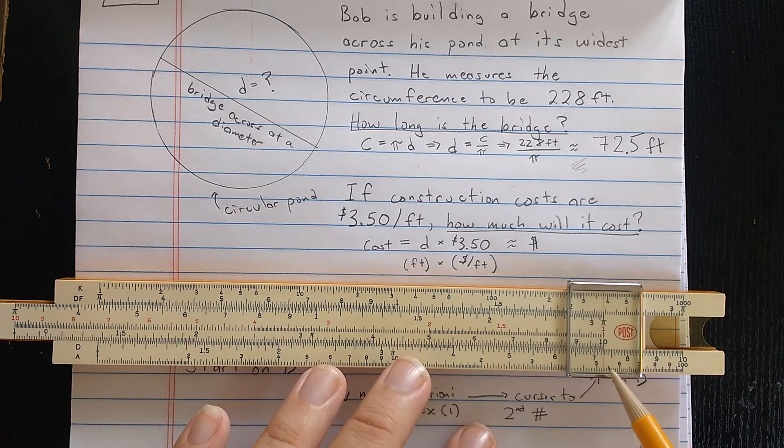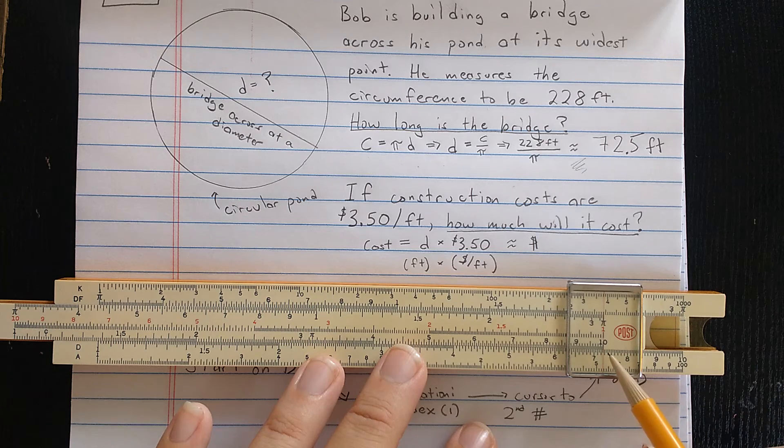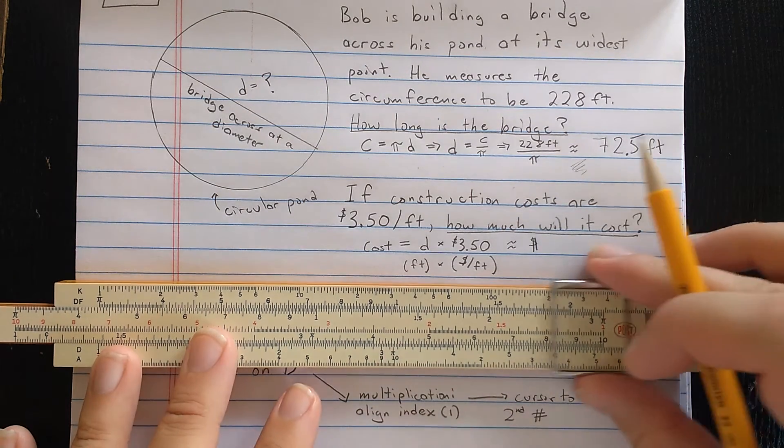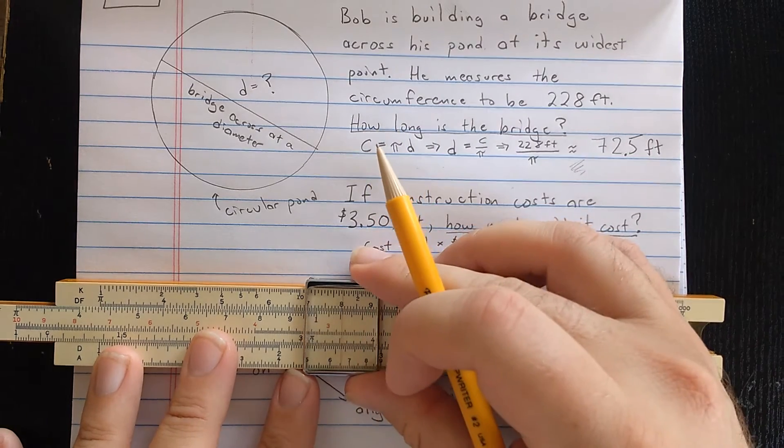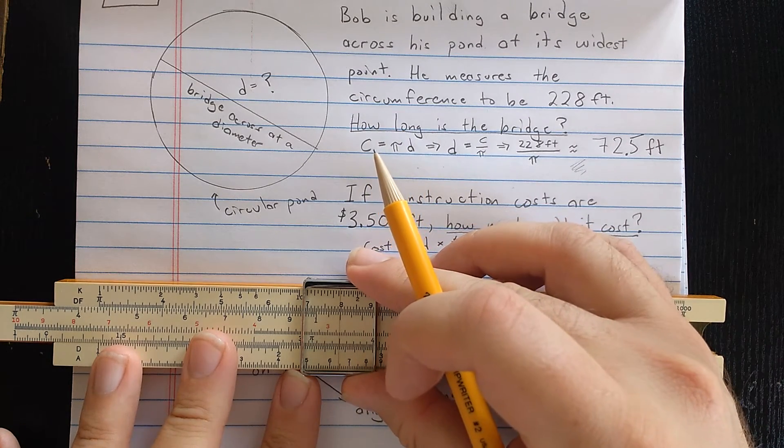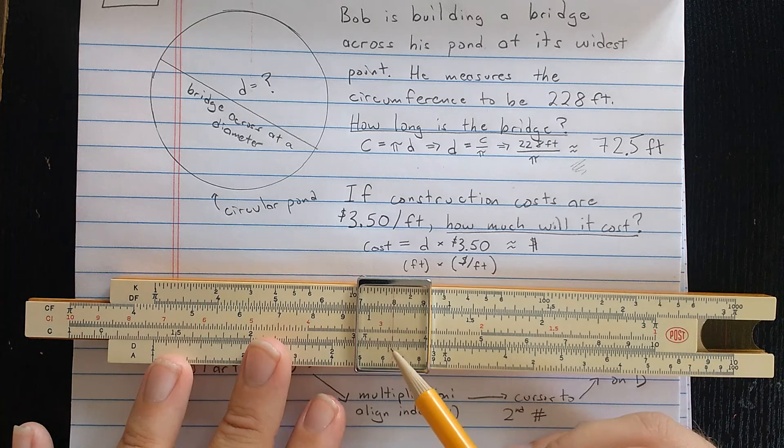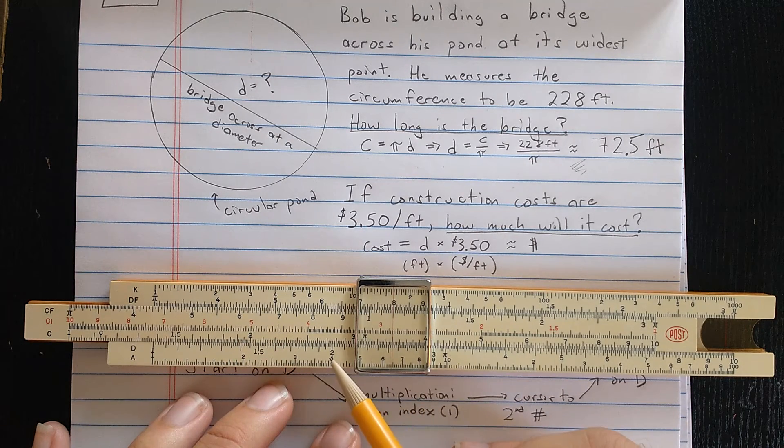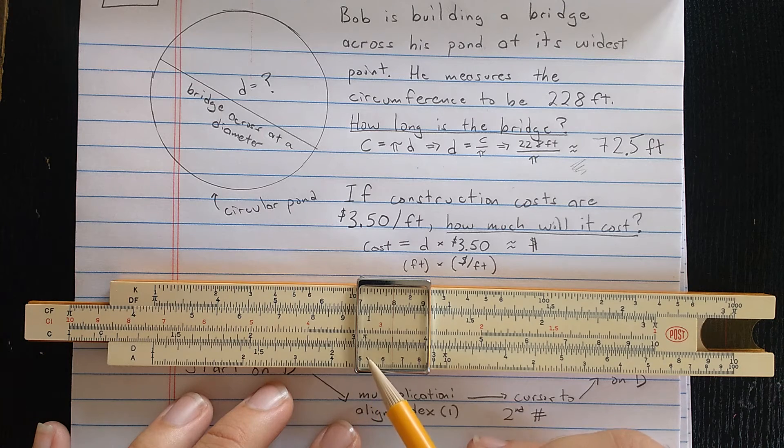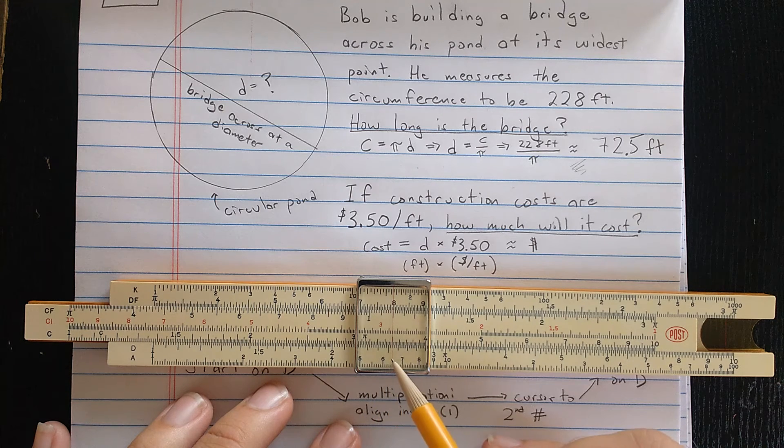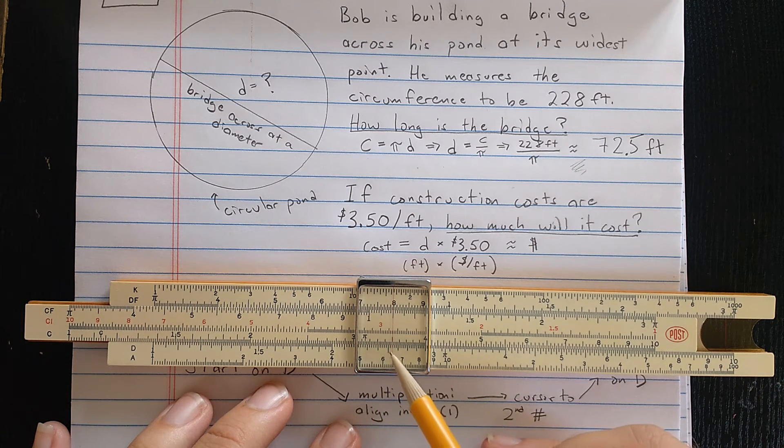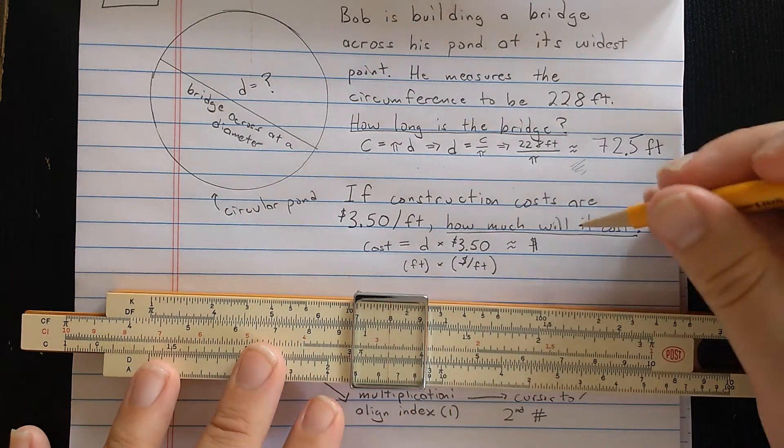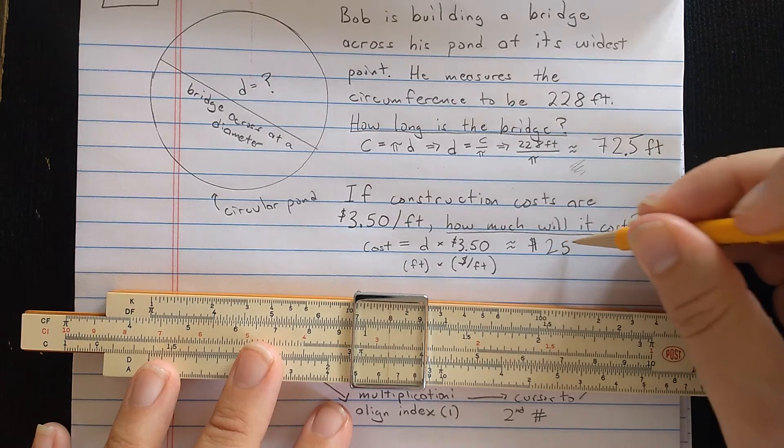Okay. So we found the first number, the 72.5. I have aligned the index of the C scale. Then I simply move to the second number on the C scale, which is 3.5. So I found the 3.5 on the C scale. And then the result is reading on the D scale. If you look, that's about 2, 2.1, 2.2, 2.3, 2.4, 2.5, about 2.54.